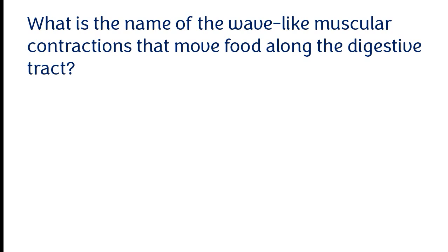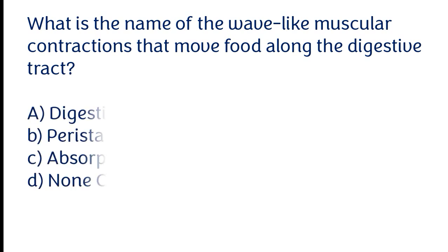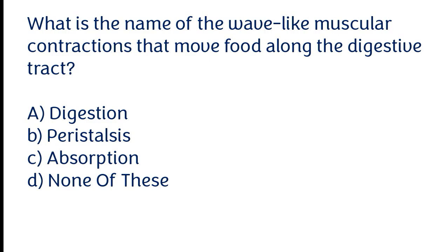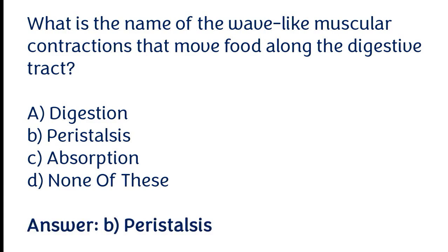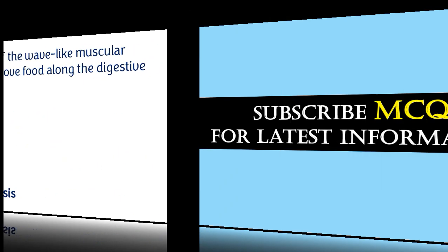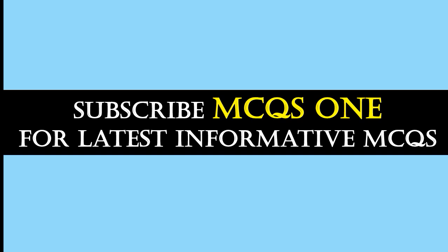What is the name of the wave-like muscular contraction that moves food along the digestive tract? Options: a) Digestion, b) Peristalsis, c) Absorption, d) None of these. The correct answer is option B. Peristalsis. Thanks for watching, subscribe to MCQs1 for the latest informative MCQs.